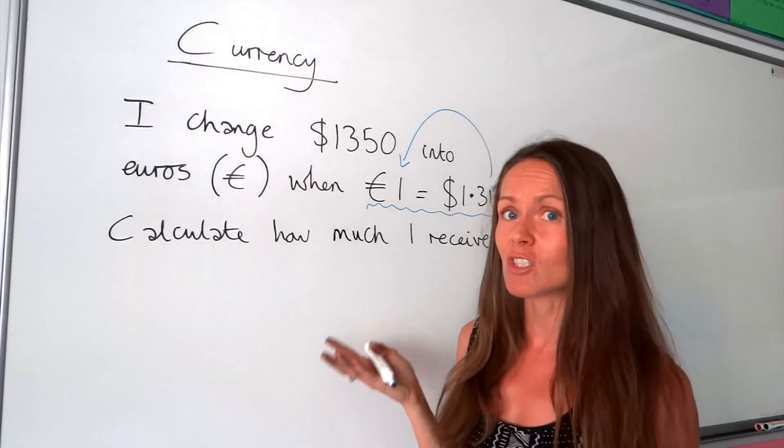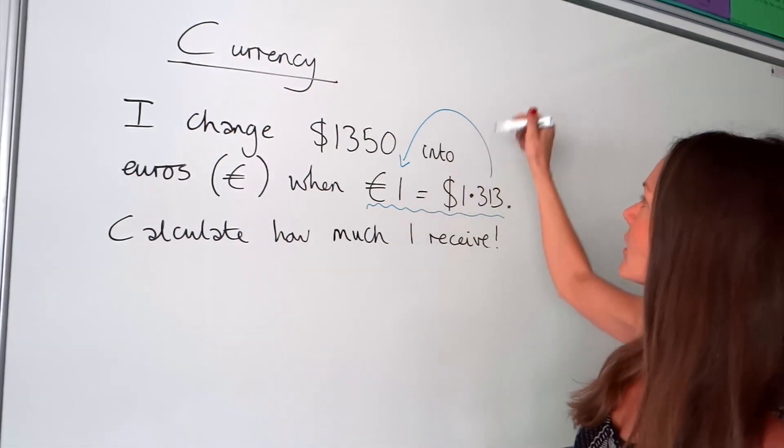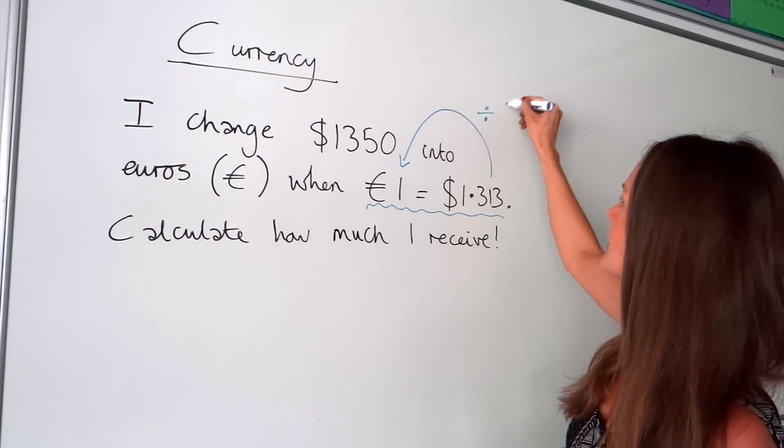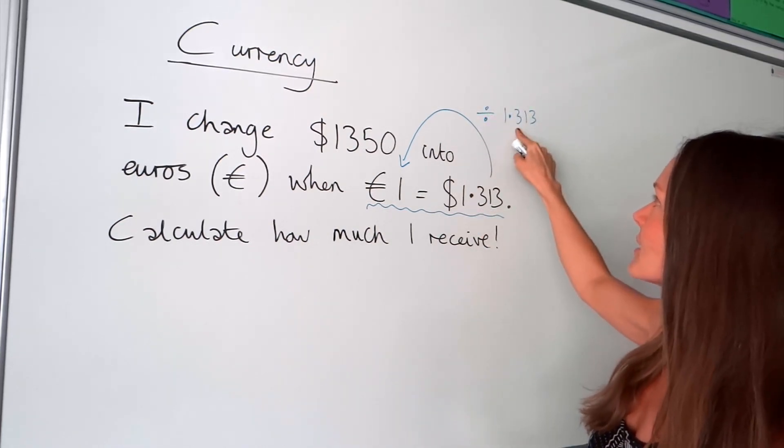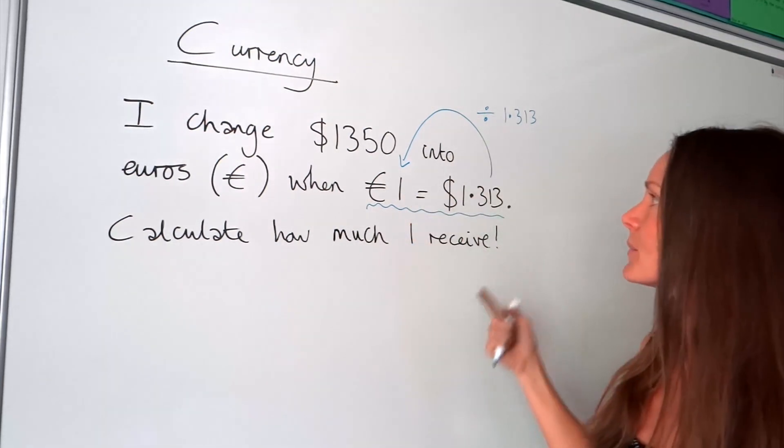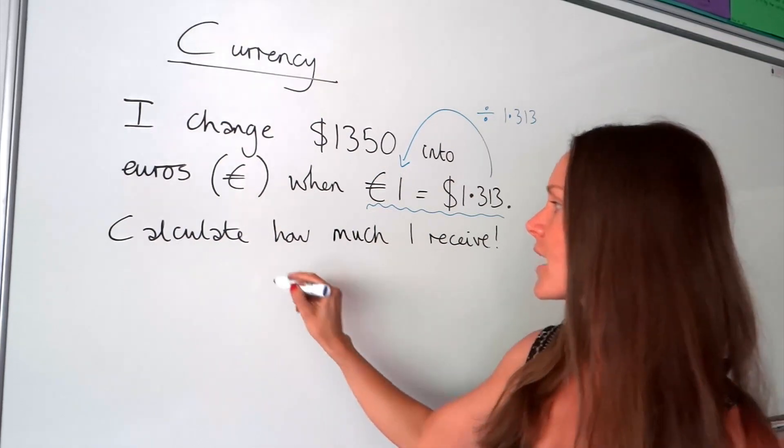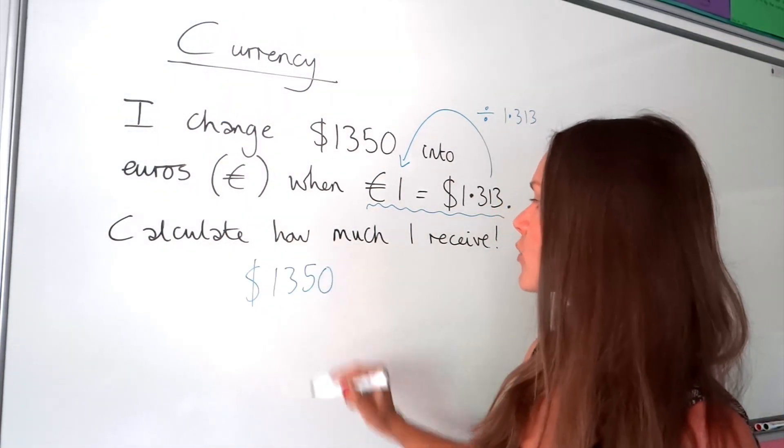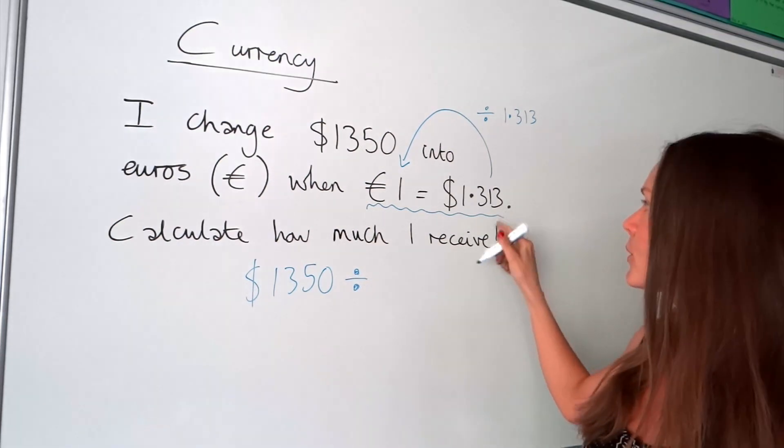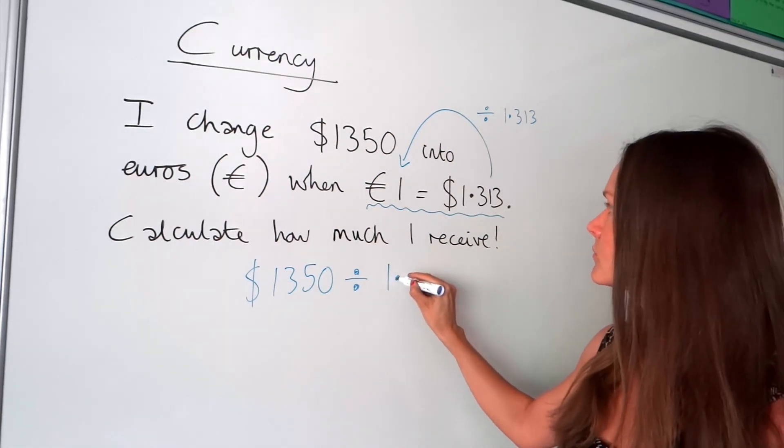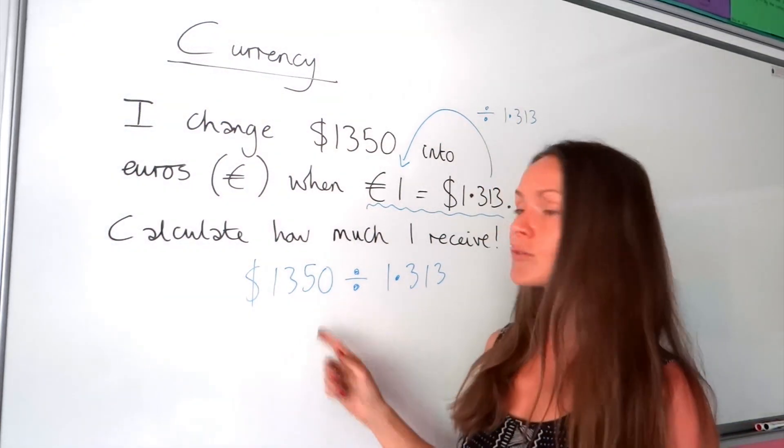We've really got a 50-50 chance of getting this question right. To get from this number to the number 1, well, I have to divide it by itself. Because whenever you divide a number by itself, you always get 1. That means we have to do the same with this amount of money. I have to take that amount of dollars that I've got to spend and I'm going to divide it by 1.313.